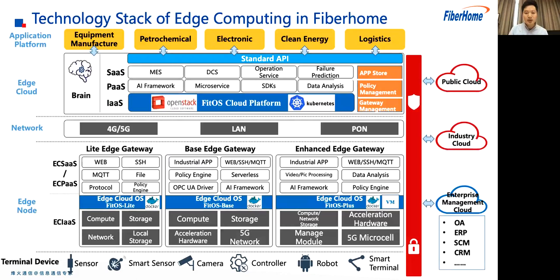To meet those requirements, Fiberhome is building a technology stack for edge computing to support different industry application platforms like electronics manufacturing. We build edge cloud to work like a brain, providing standard APIs to support those applications and also managing edge nodes that are closer to users. Through different kinds of networks like 5G, LAN, and WAN, we provision three kinds of edge nodes to meet various scenarios. The edge cloud and nodes are not standalone — they interact with larger, more powerful clouds like public cloud and enterprise management clouds owned by users.